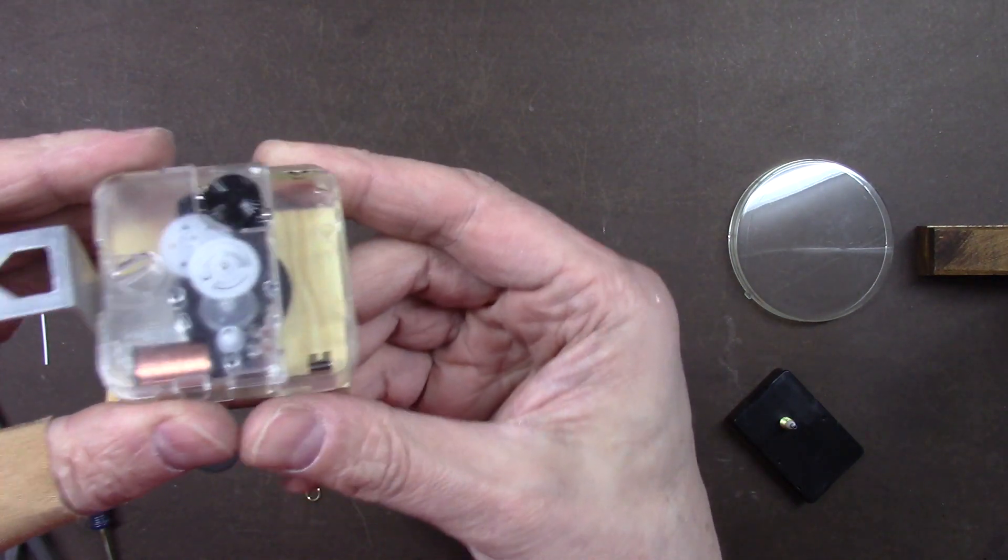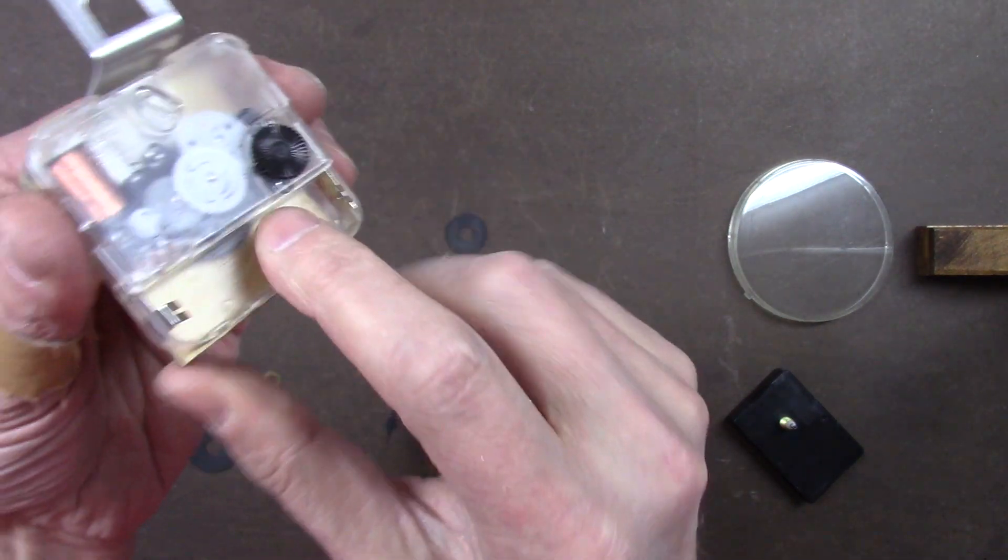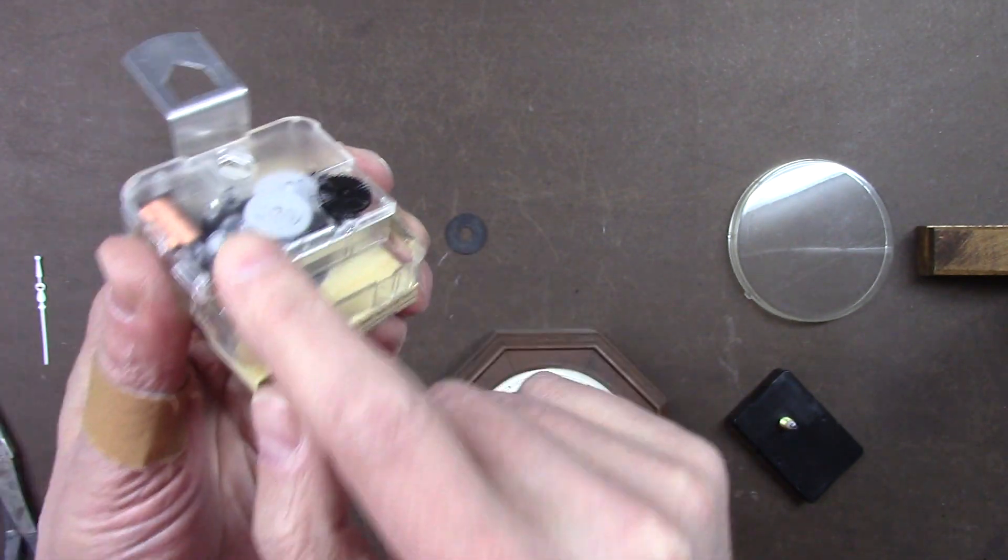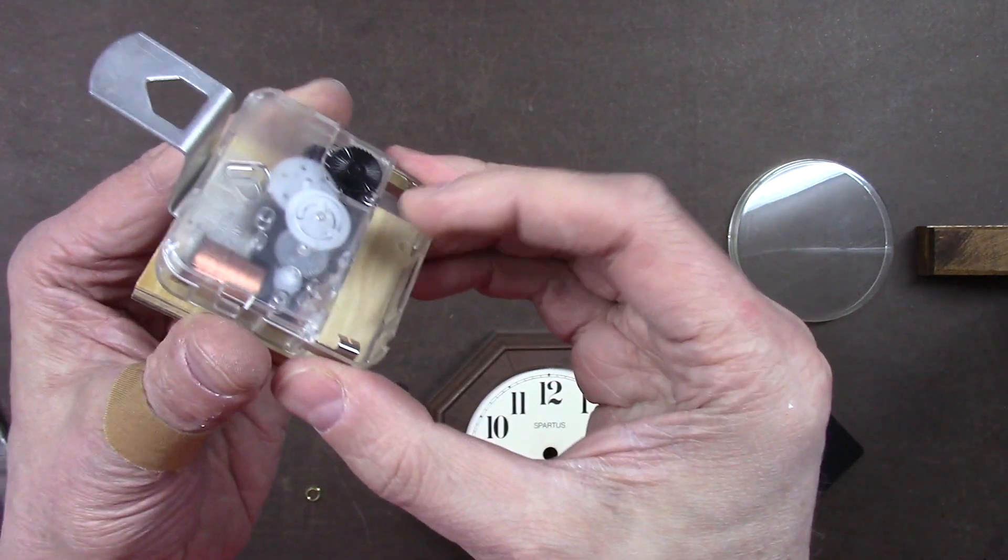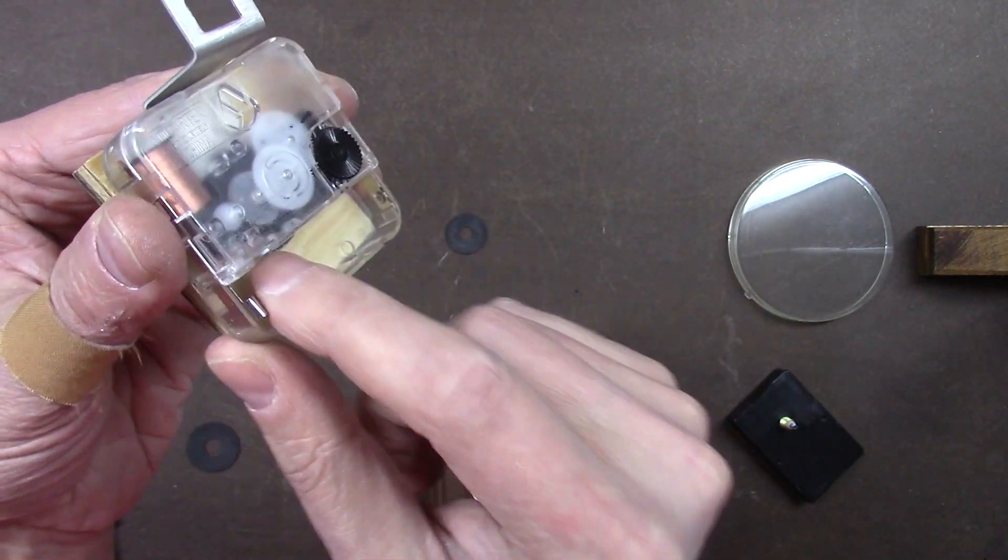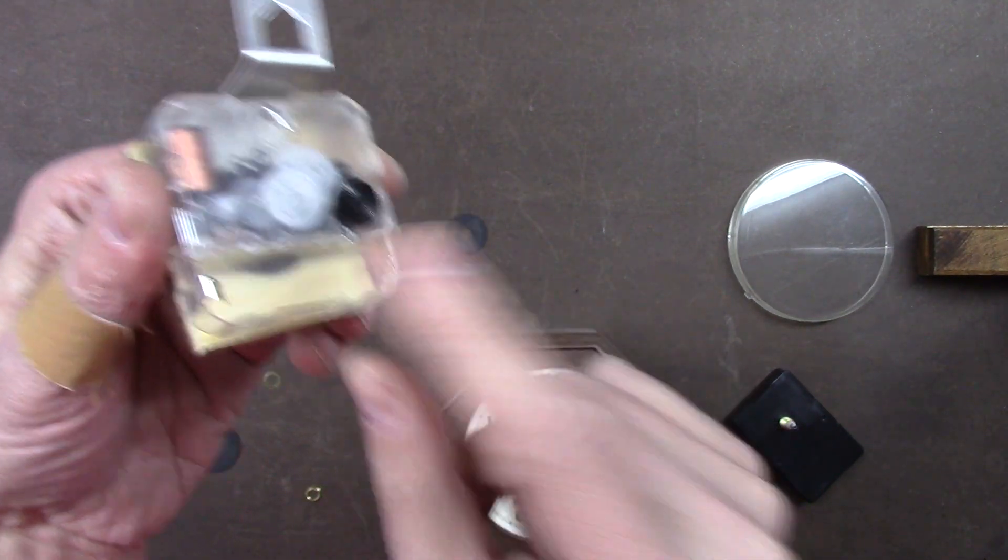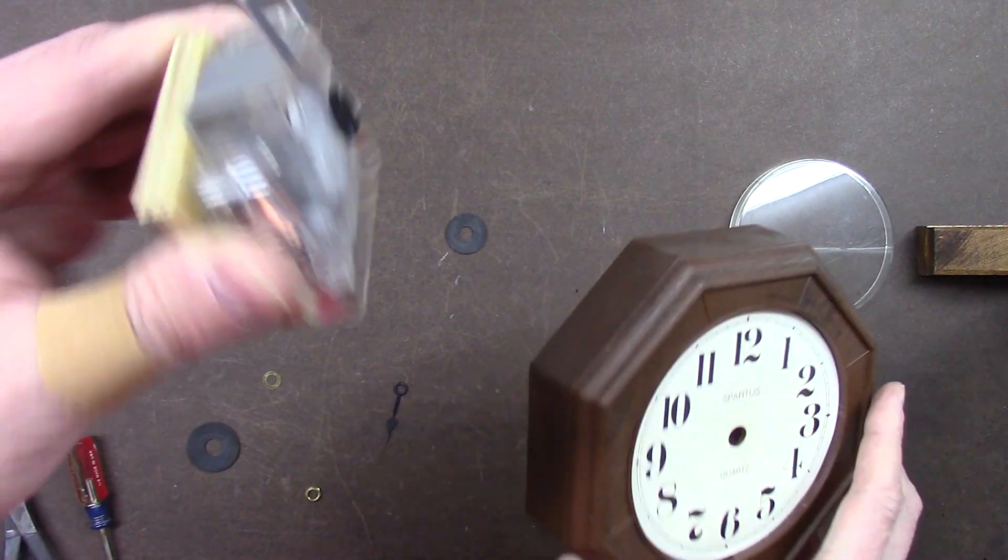Now it's time to put the movement on there. When you're putting these movements on there, you want to put the battery on the bottom. So if the battery starts leaking, it won't affect the mechanicals up there. Put the battery on the bottom so that when these cheap batteries start leaking, the battery acid won't get up in there.